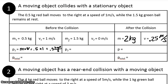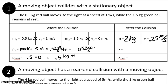Our second object was stationary. Objects that are stationary have no momentum, so the momentum here is just 0 kilogram meters per second. Adding those two momenta together: 0.5 plus 0 equals 0.5 kilogram meters per second. So before the collision, our total momentum was 0.5 kilogram meters per second for the system of the red and the green ball together.